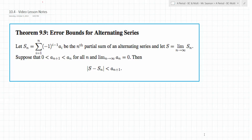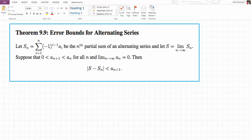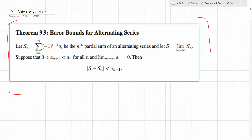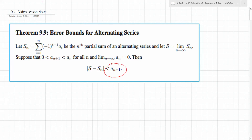Error bounds are not new for us. We saw them with alternating series in Theorem 9.9. It said that if you have a partial sum of alternating series terms going to n terms, and you want to know how far that partial sum could be from the actual sum of the series, all you need to do is find the next term — that will be the bound. So it all came down to finding one thing: the next term for alternating series.